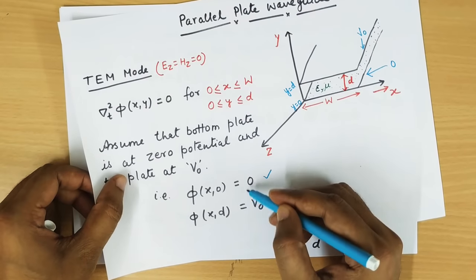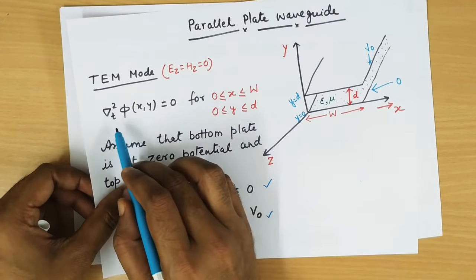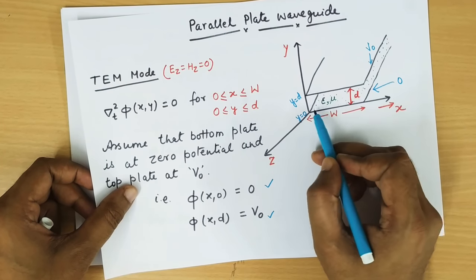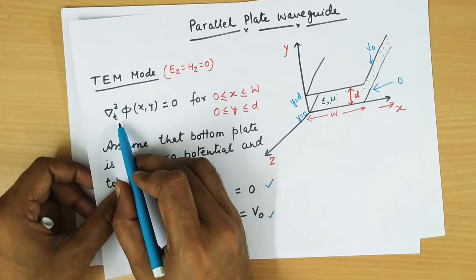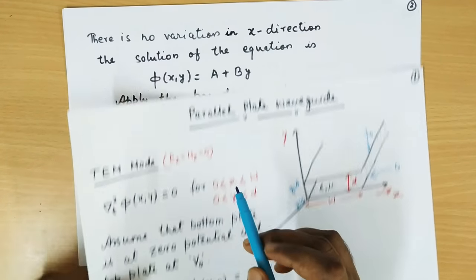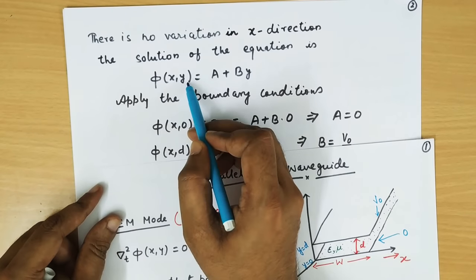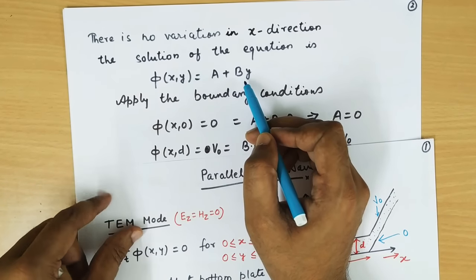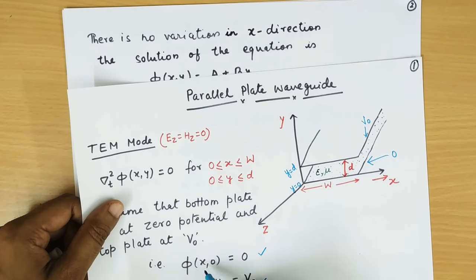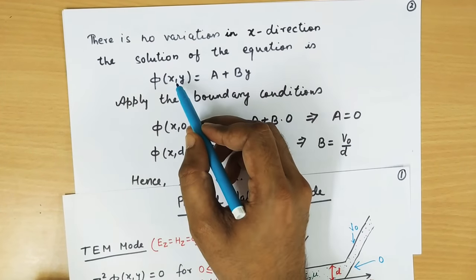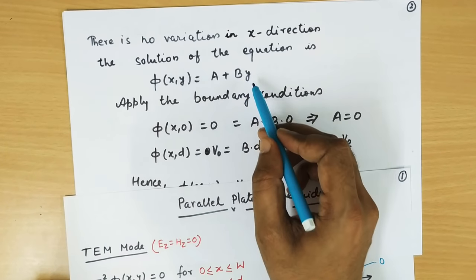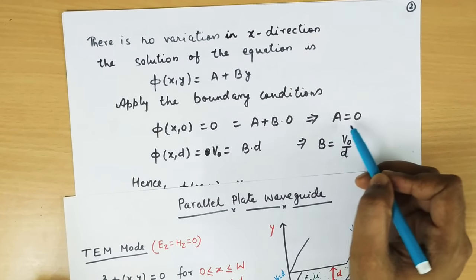Now let us apply this boundary condition to solve this equation. As we know that the variation of potential will be only along the y direction but not in the x direction. So this equation converts to only the y direction, and if we solve for that, we will get the solution as phi(x,y) equal to A plus By, since the potential varies only in the y direction. Applying the first boundary condition phi(x,0) equal to 0, we put y equal to 0 and find that A equal to 0.